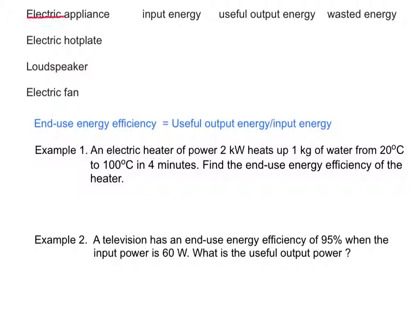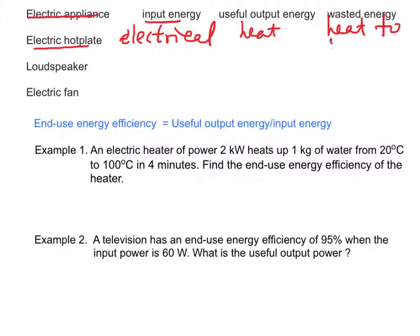Let's see some more examples of electrical appliances. For an electric hot plate, the input energy is electrical. The useful output energy is heat, and the waste energy is also heat released to the surroundings. For a loudspeaker, the input energy is electrical energy and the wasted energy is in the form of heat.